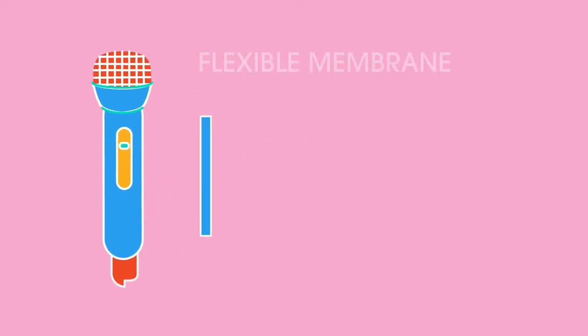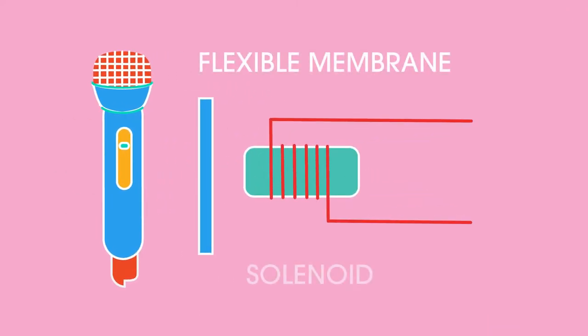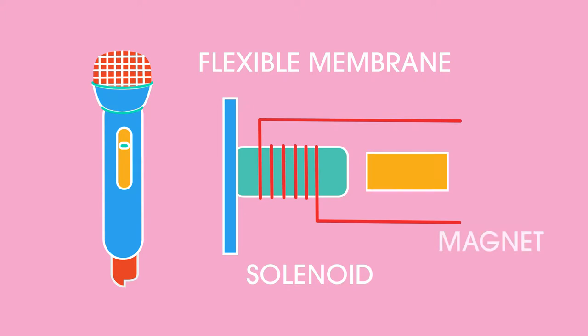Now let's look at a simple microphone. A flexible membrane is attached to a solenoid, which slips over a cylindrical permanent magnet. When assembled, it looks like this. Some of you might be thinking, this looks a bit like a loudspeaker. And you would be correct.